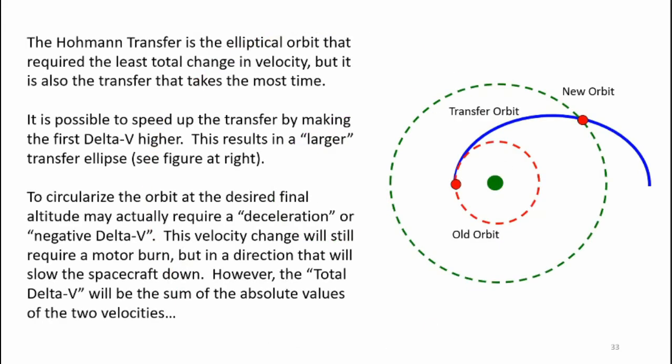It is possible to have a faster transfer orbit but that means I'm going to have to add more delta-v at the lower orbit then have a higher delta-v in order to change the velocity to achieve the new higher circular orbit and that's depicted in the figure at the right.